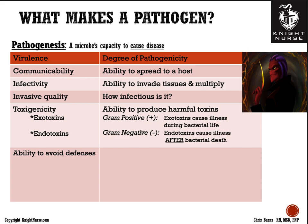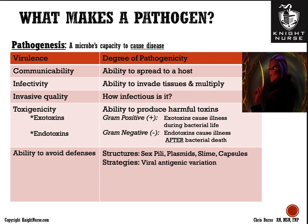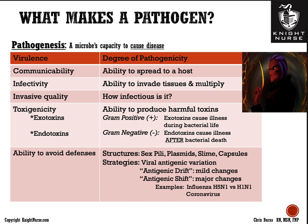Pathogens can also avoid host defenses through structures like sex pili, plasmids, and slime capsules. Viruses use antigenic variation — antibodies target specific surface proteins, but if the virus changes its antigen, it can evade immunity. Antigenic drift involves mild changes with some host recognition, causing less concern. Antigenic shift involves a major change in protein structure where the host doesn't recognize it at all — examples include influenza H5N1, H1N1, and coronavirus.